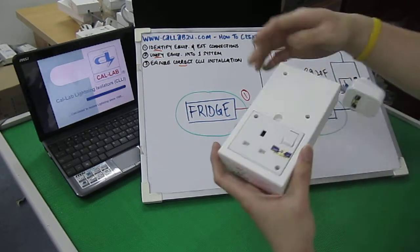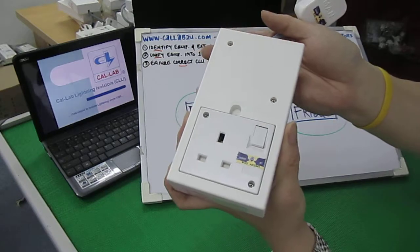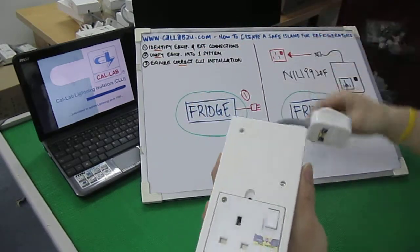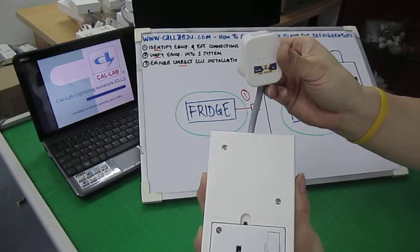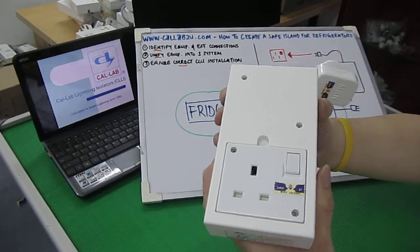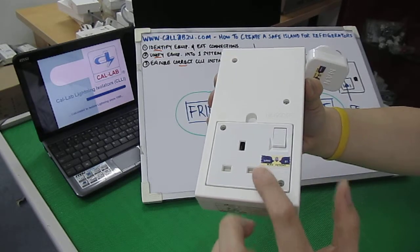Let's take a look at its physical form. So this is the NILI 9920F as is in the drawing. Plug the three-pin plug into a wall outlet and the three-pin plug of the refrigerator into the isolator.